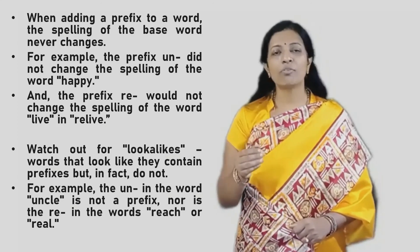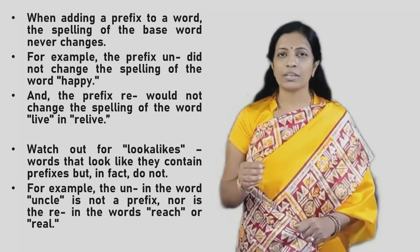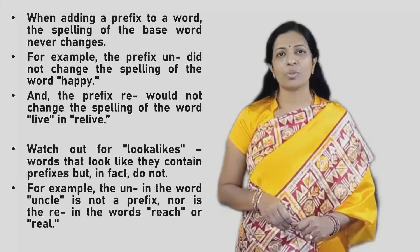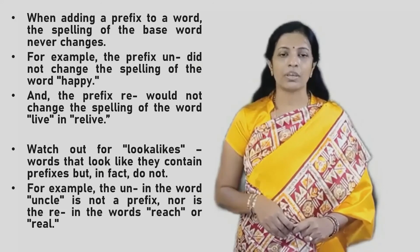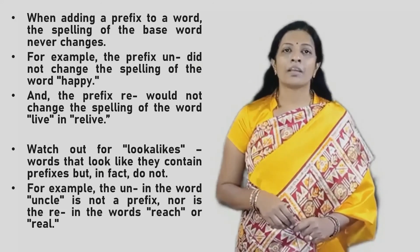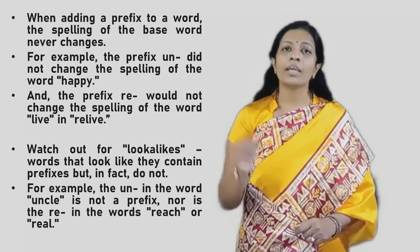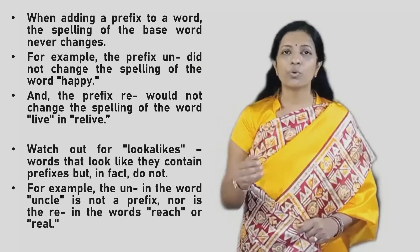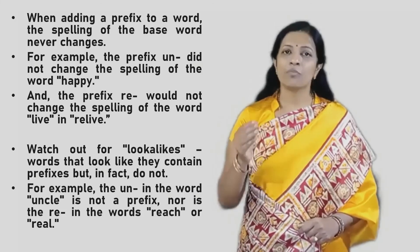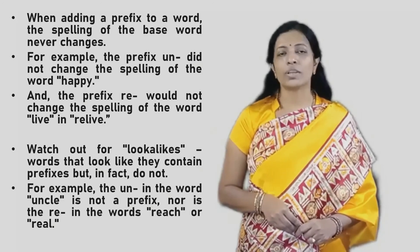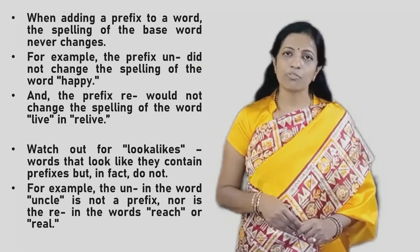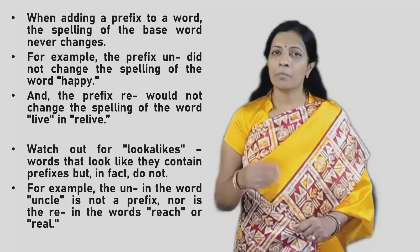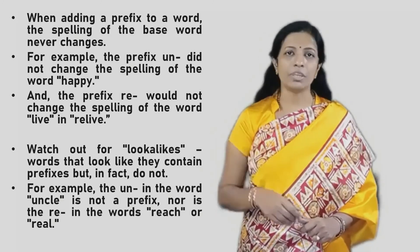We should also be careful about lookalikes — words where a prefix appears to have been used, but actually has not. For example, the word uncle begins with UN, but the prefix UN has not been added here. Similarly, words like reach or real begin with RE, but it is not the prefix RE that has been used. Be careful of such words which look like a prefix has been used but were actually formed without one.